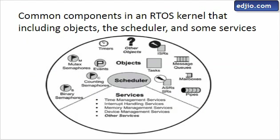Now let's look at the same thing in a block diagram. Here we have objects, scheduler, and services. The scheduler is the core of your RTOS. Typical objects in any RTOS are listed here — these objects are used by the application to perform multitasking and communicate between tasks. The scheduler runs as part of the kernel and consumes about two to five percent of the CPU cycle.